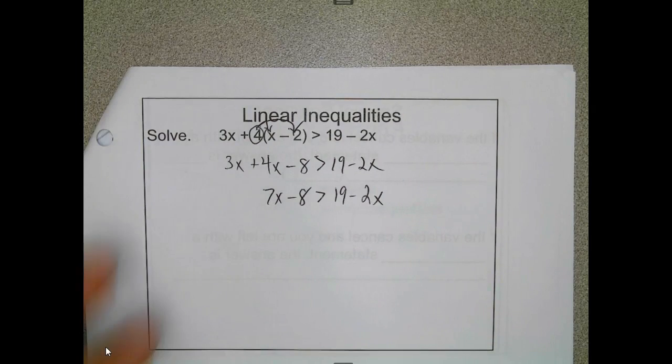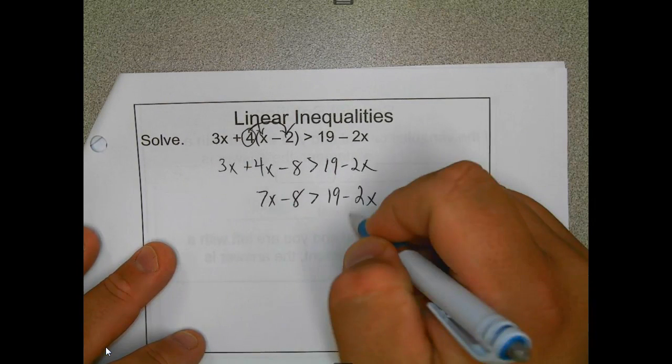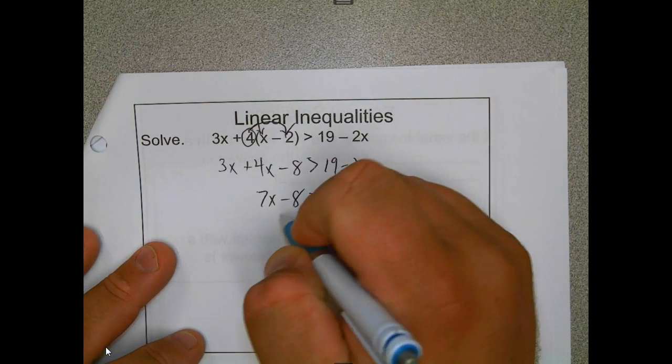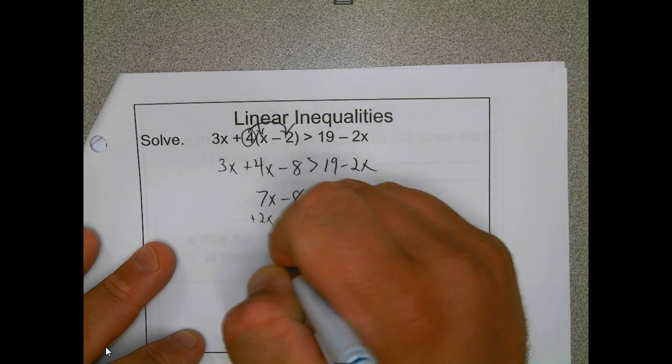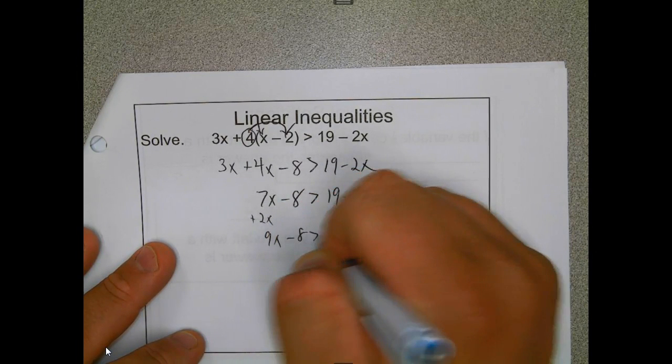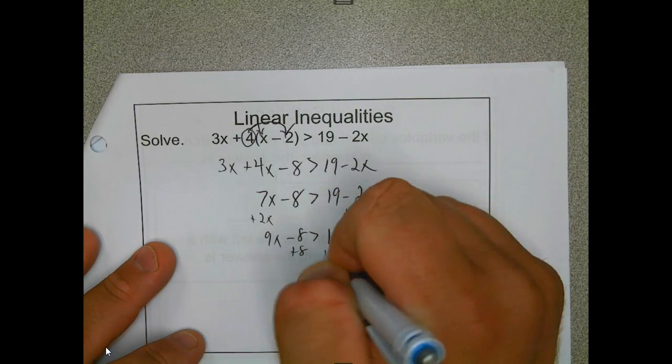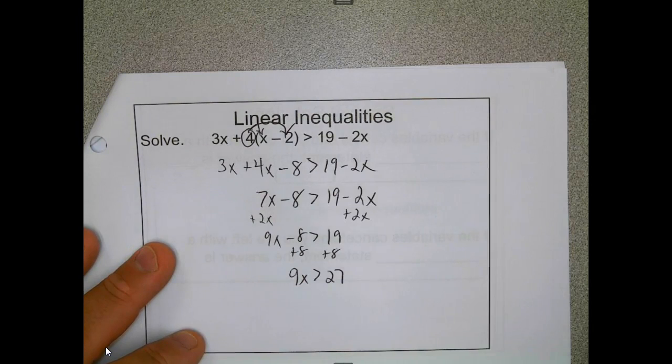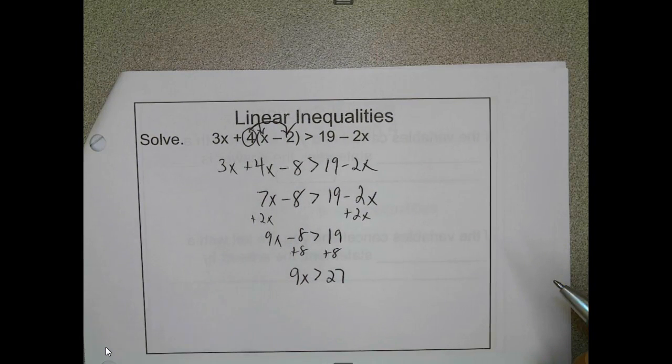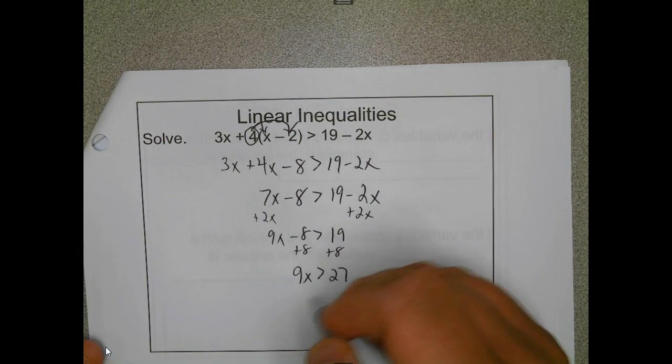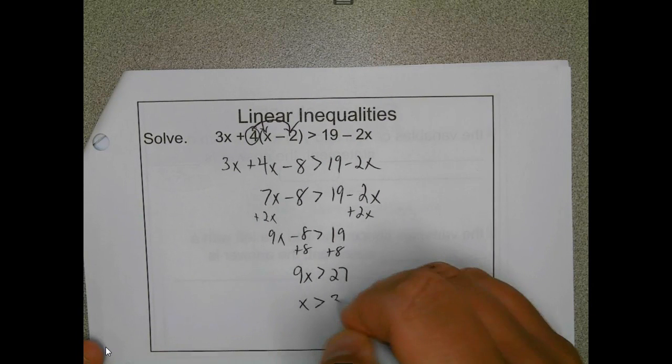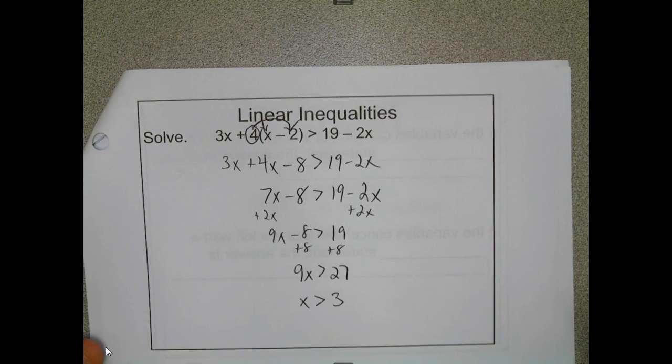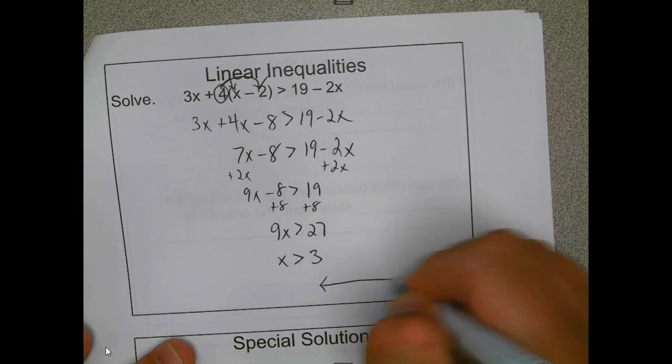And just like we talked about with the steps of equations and inequalities, you get all the variables on one side and all the numbers on the other. So I'm going to add 2x to both sides and I'm going to add 8 to both sides. Now luckily I get to divide and not have to worry about the negative, so x is greater than 3. And if I'm going to show that on a number line, I'll put an open circle at 3 and I shade to the right.